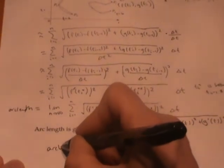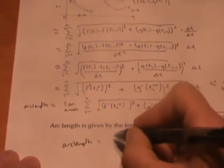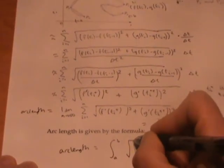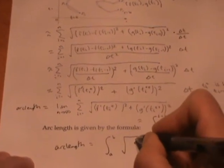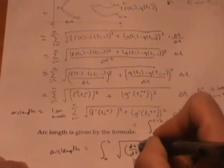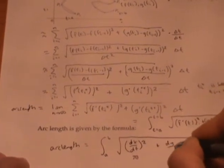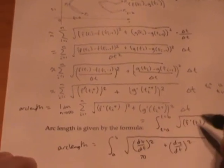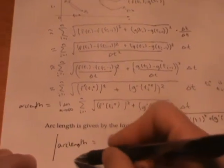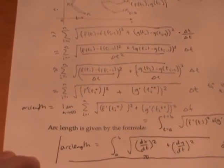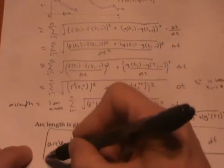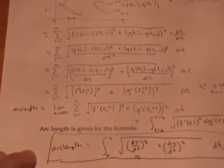It's often written as the integral of the square root of (dx/dt)² plus (dy/dt)² dt. dx/dt is just another way of writing f prime of t and so on. So as promised, we have a pretty simple formula for arc length coming out of this somewhat lengthy derivation.